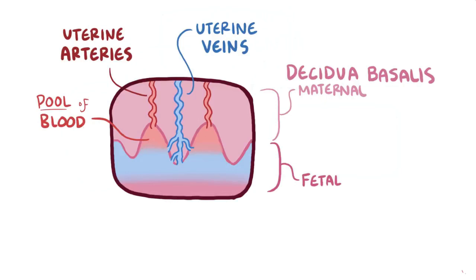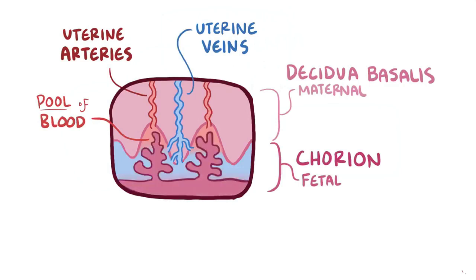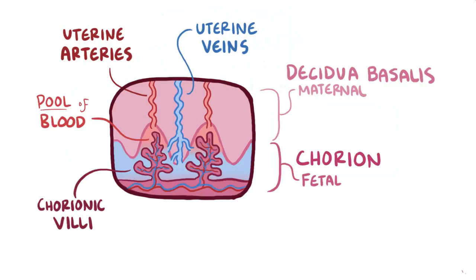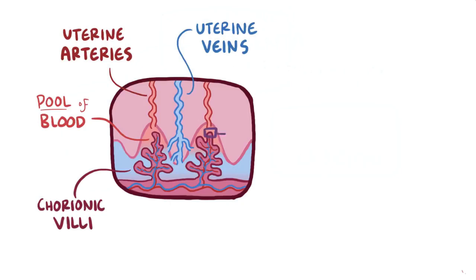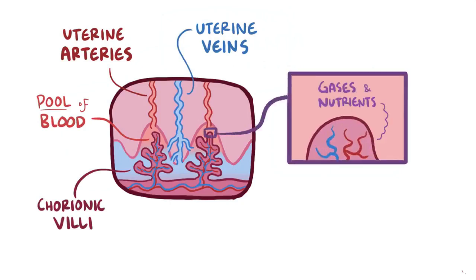The fetal layer of the placenta is called the chorion, which is a tissue that has finger-like projections called chorionic villi, which have tiny fetal arterioles and venules. These villi push into the decidua basalis, like tiny fingers reaching into a warm pool of oxygen-rich maternal blood. Gases and nutrients move back and forth between the decidua basalis and the fetal veins by diffusing through the tissue layer of the thin chorionic villi.